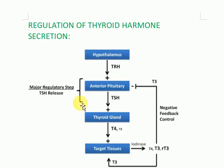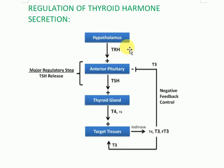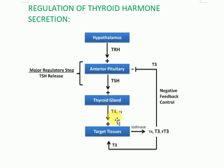Now the next part is the regulation of thyroid hormone secretion. The secretion is regulated through hypothalamic-pituitary control. The hypothalamus secretes TRH (thyrotropin-releasing hormone), which acts on the anterior pituitary gland, causing the release of TSH (thyroid-stimulating hormone). TSH is the major regulatory step, which then acts on the thyroid gland, causing it to secrete T4 and T3.